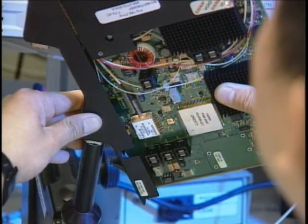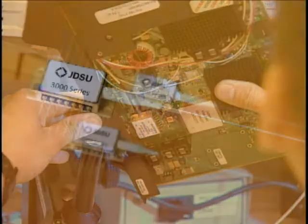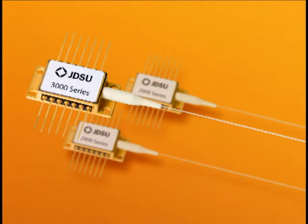Electro-optic components fall into two broad categories. The first includes devices that convert signals between optical and electrical formats such as LEDs, lasers, and photodiodes.